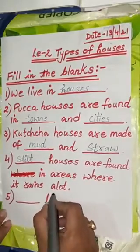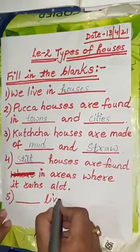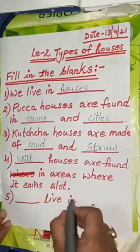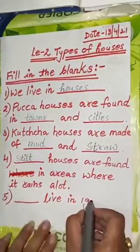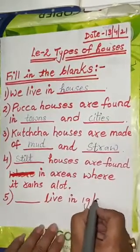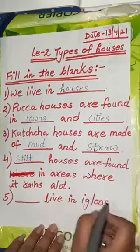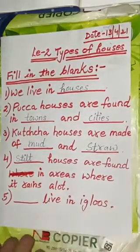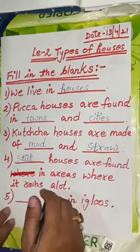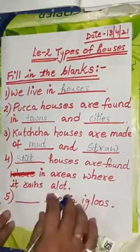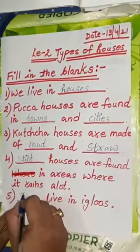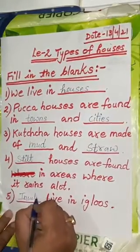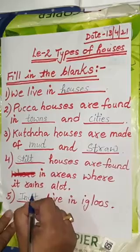The last question: dash live in igloos. Who live in igloos? The answer is Inuit — Inuit live in igloos.